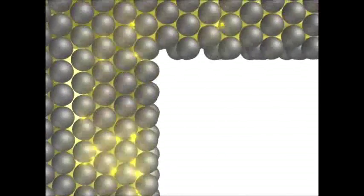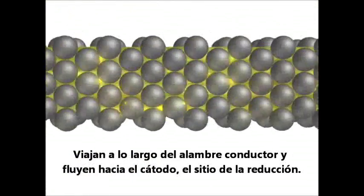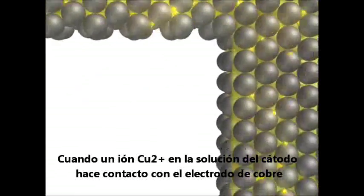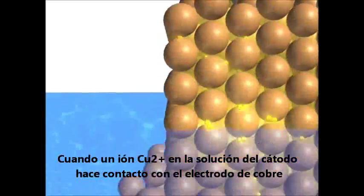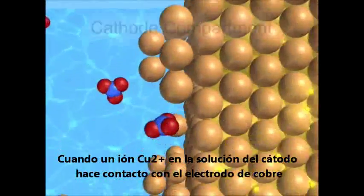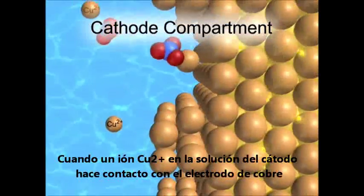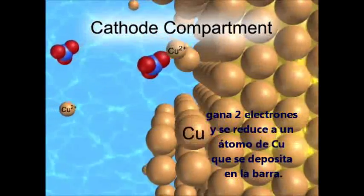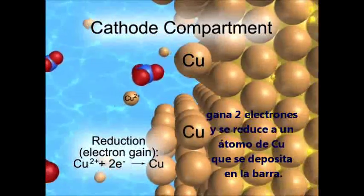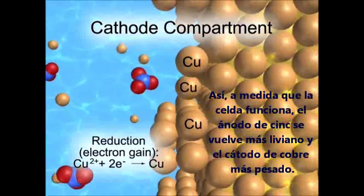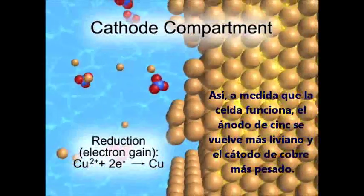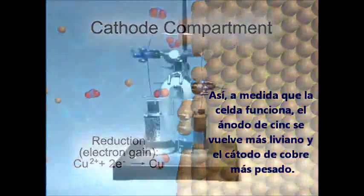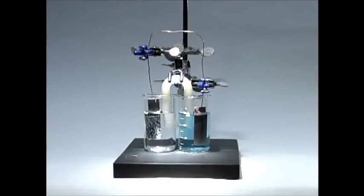They travel through the wire and flow into the cathode, the site of reduction. When a copper 2+ ion in the cathode solution makes contact with the copper electrode, it gains two electrons and is reduced to a copper atom, which deposits on the bar. Therefore, as the cell runs, the zinc anode becomes lighter and the copper cathode heavier.